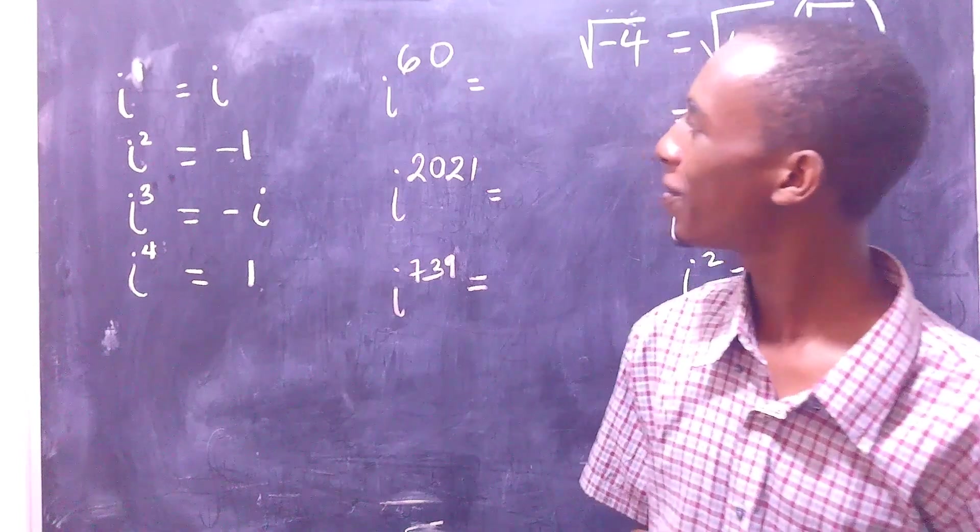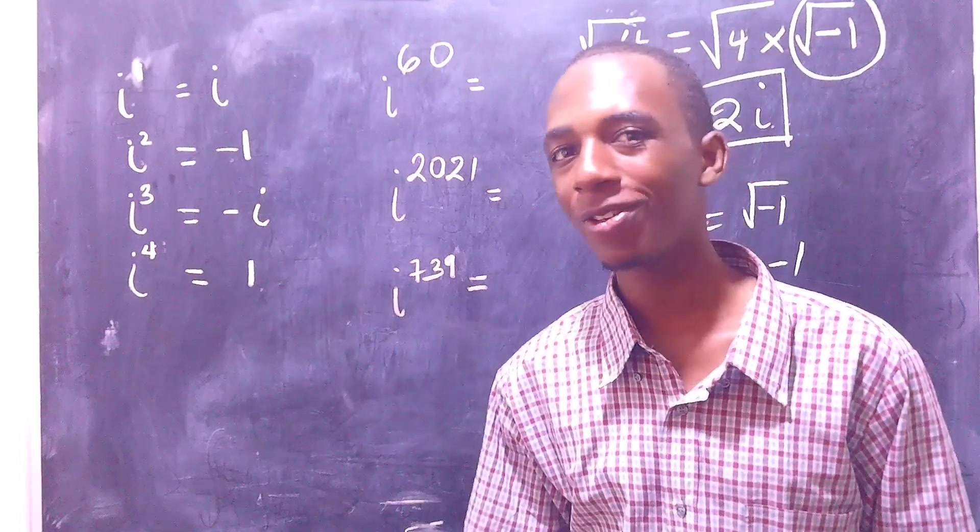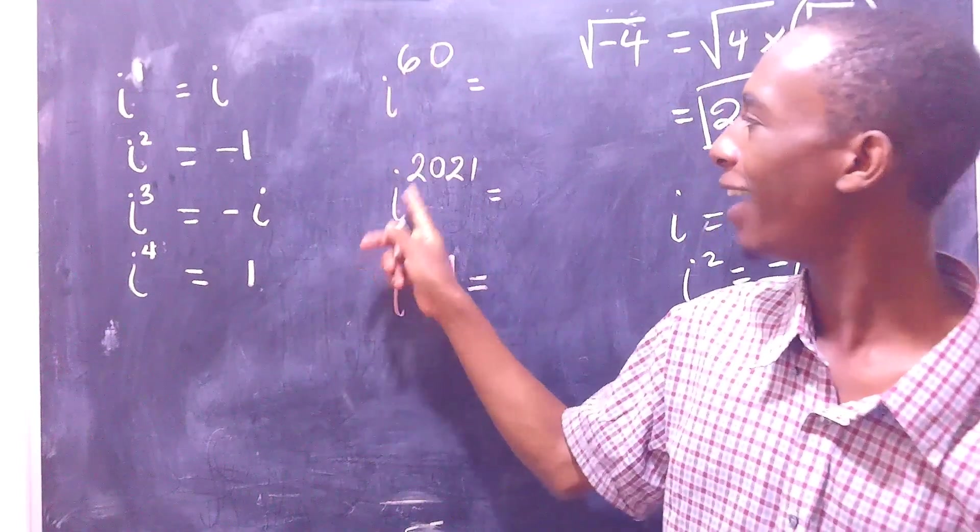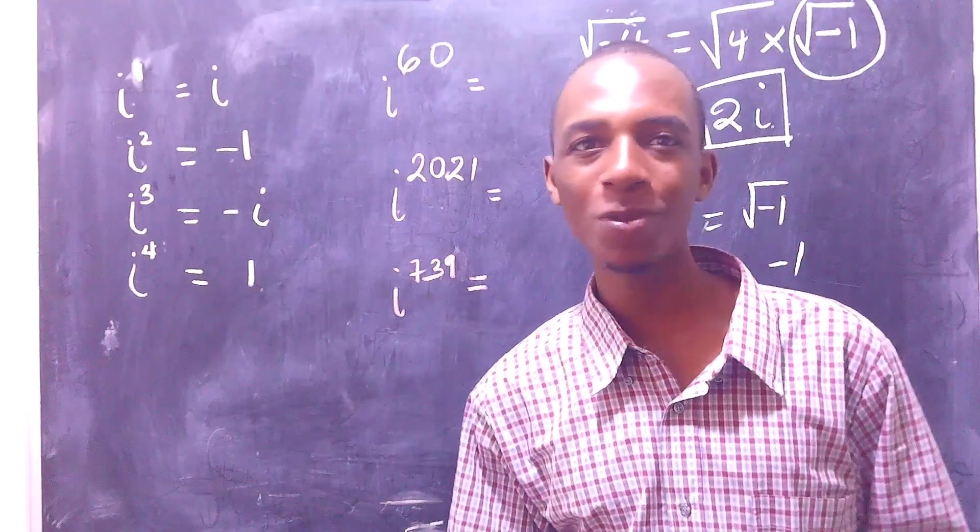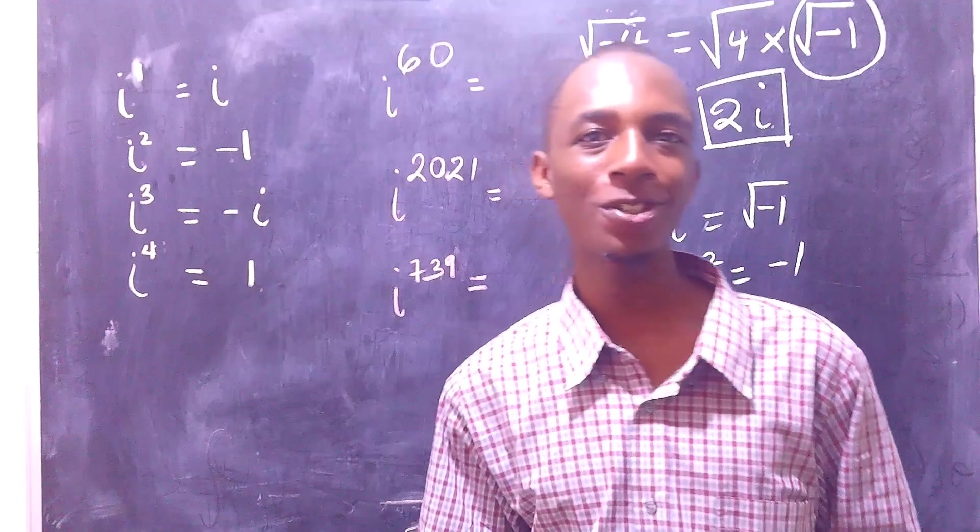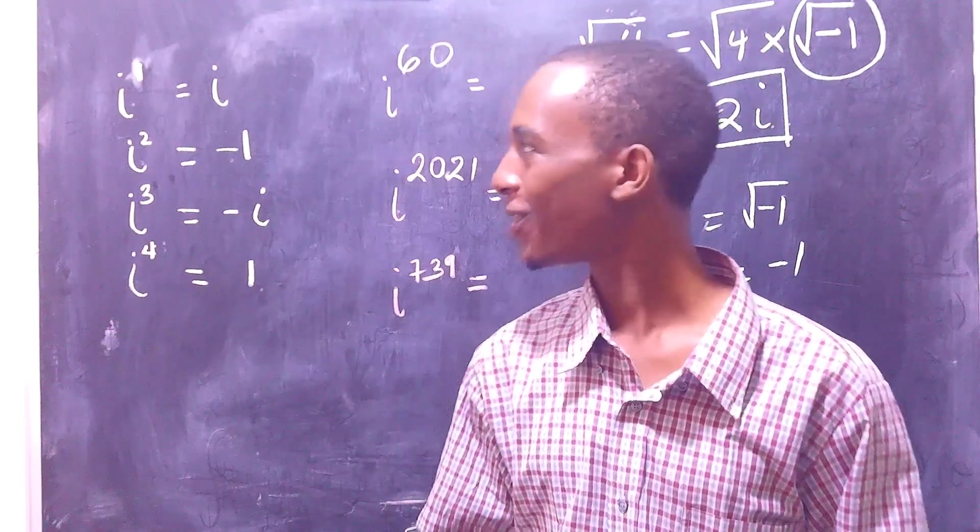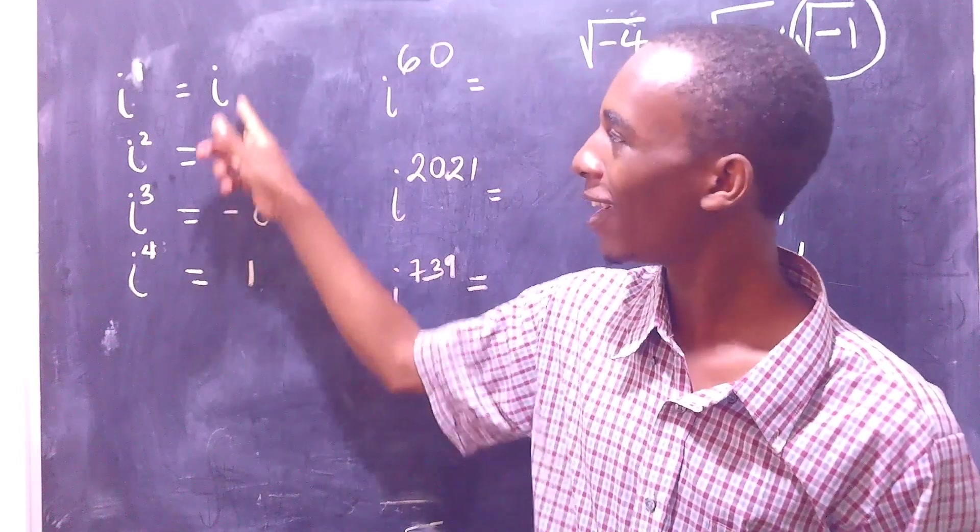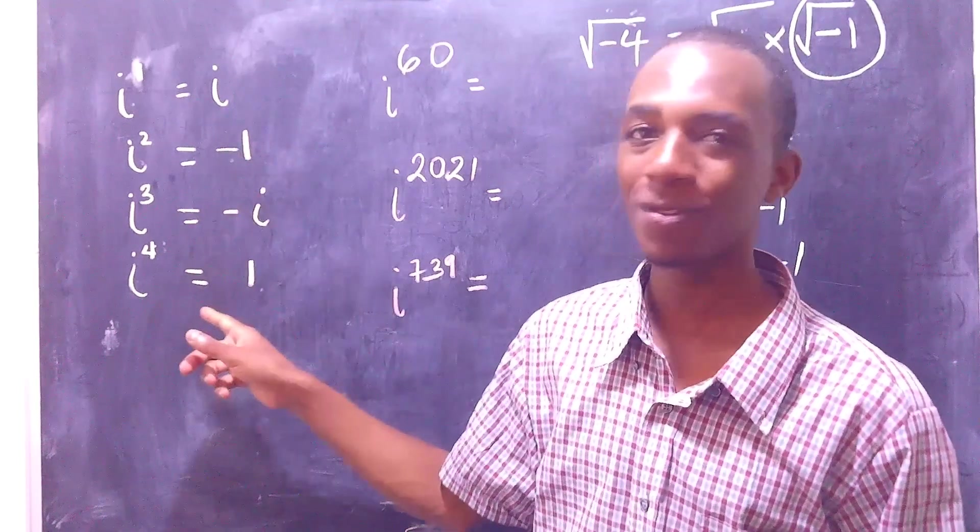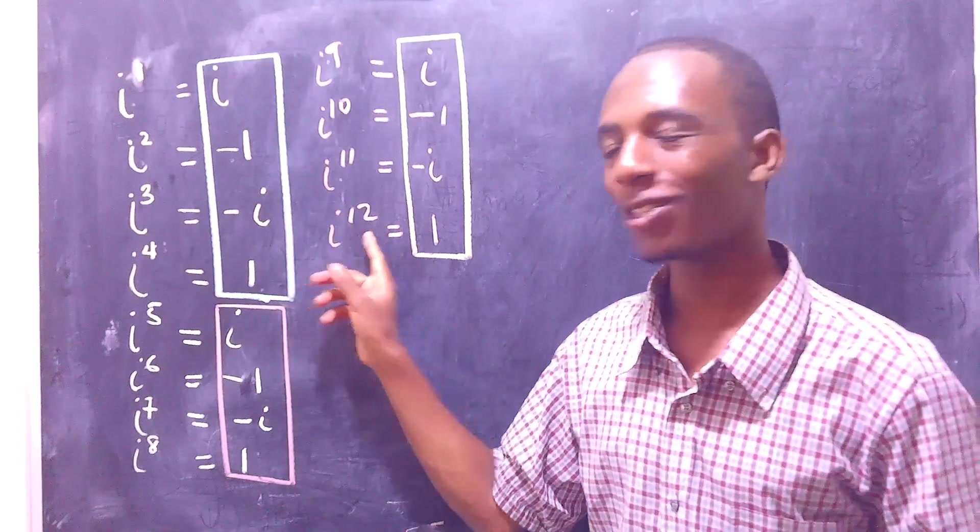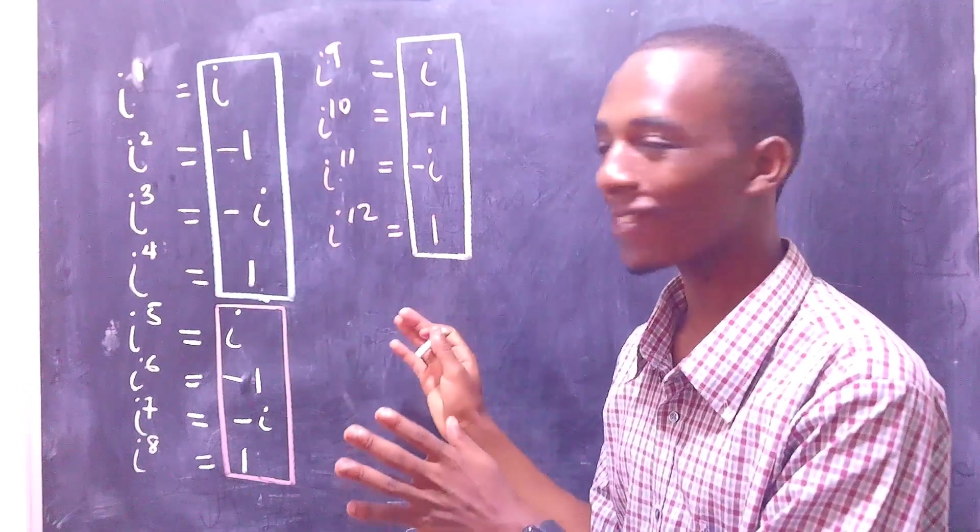But let's see what happens if you want to calculate very high powers of i. Let's say i to the power 60, i to the power 2021, or even something larger. How do we do that? Before we actually do that, let me show you a very interesting pattern in these powers of i. So I've written out the powers of i up to i to the 12th power, and something interesting is happening here.